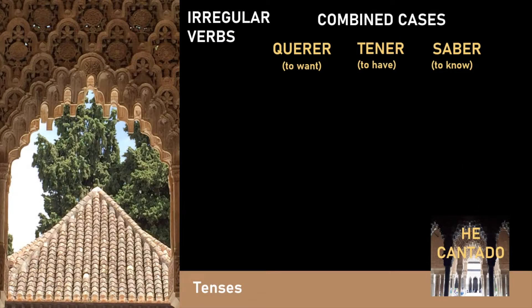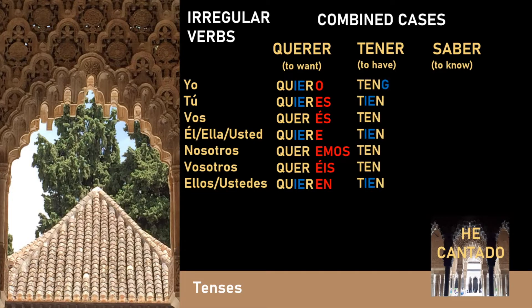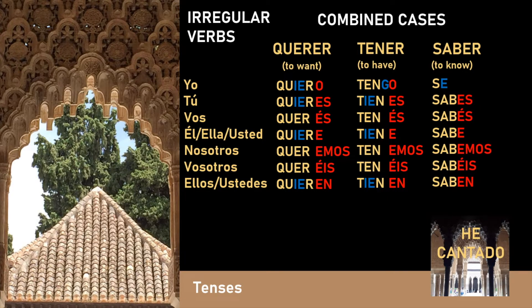Finally we have the conjugation of tener and venir — cases which are a combination of the E replaced by IE or the additional G. Querer is conjugated as: yo quiero, tú quieres, vos querés, él/ella/usted quiere, nosotros queremos, vosotros queréis, ellos/ustedes quieren. Tener: yo tengo, tú tienes, vos tenés, él/ella/usted tiene, nosotros tenemos, vosotros tenéis, ellos tienen. And the verb saber: yo sé, tú sabes, vos sabés, él/ella/usted sabe, nosotros sabemos, vosotros sabéis, ellos/ustedes saben.